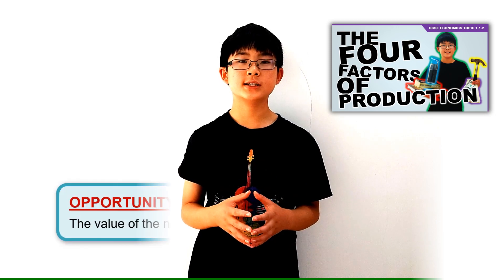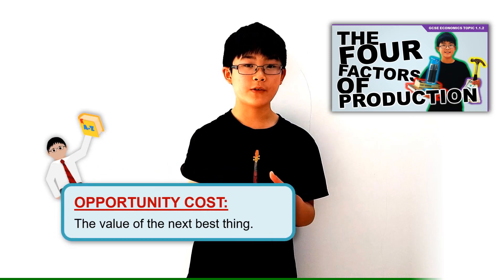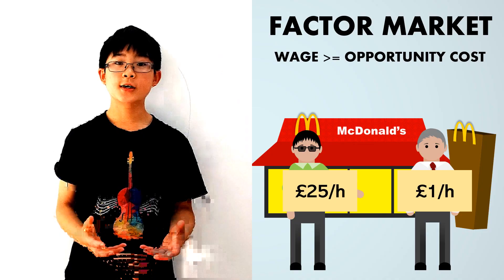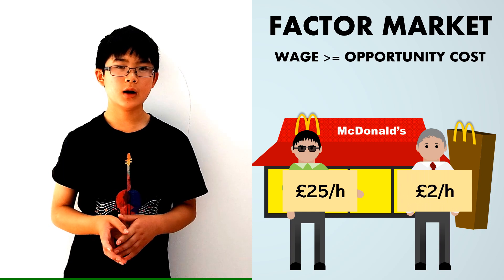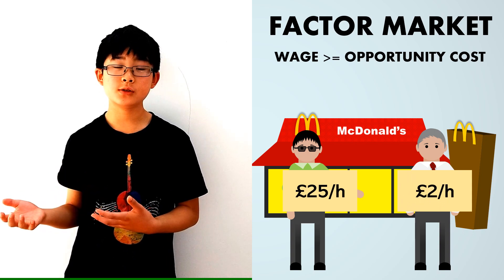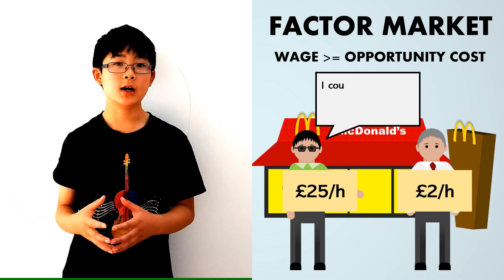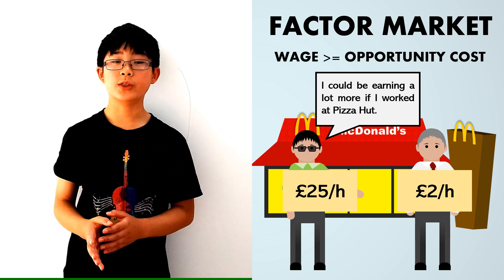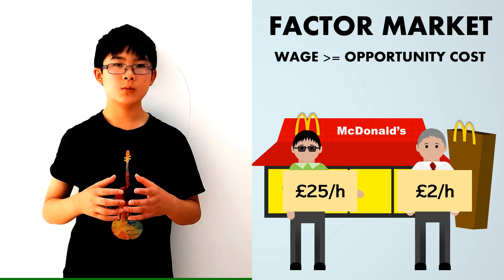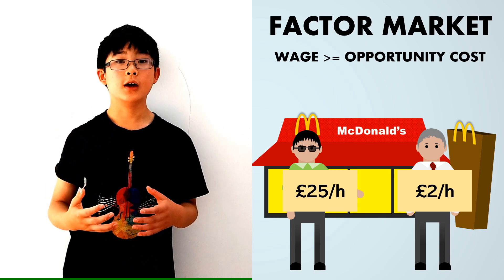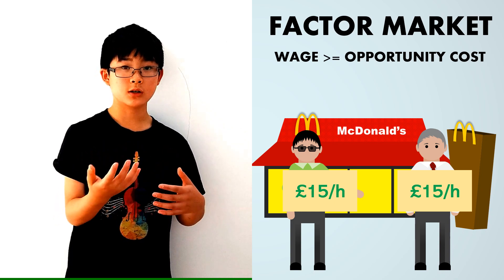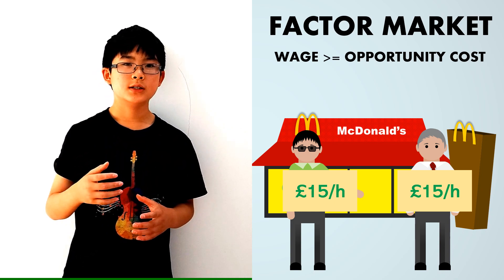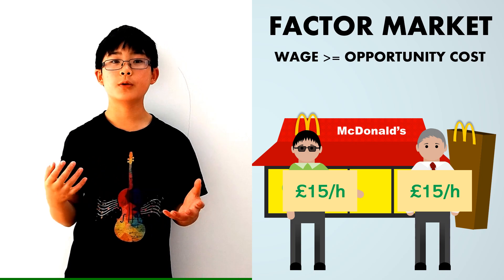If you remember from the previous video, the opportunity cost is the value of the next best thing. The value of the thing that you're giving up to do what you're doing. So, the owner could offer me a wage of £2 an hour. But, I could always argue that my opportunity cost, the value of the next best thing, I could be working at Pizza and they would pay me more than that. So, we could come to a decision saying he'll pay me £15 an hour. Which would both cover my opportunity cost, the cost of the value of the next best thing. But, he also gets some help around McDonald's.